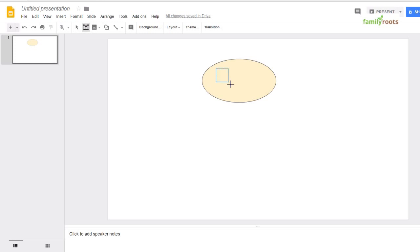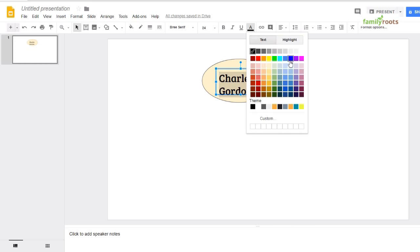And then we're going to draw a box right on top. There, and we can type in Charles Gordon. If you want to make it larger, you can change the font, you can change the size, you can change the color, whatever you need in order to tell your story well.